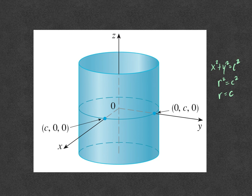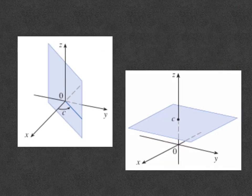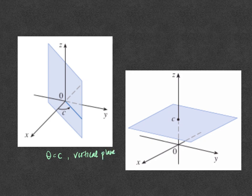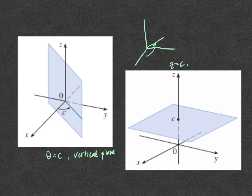This is the reason for the name cylindrical coordinates. There are a couple of other interesting surfaces. The graph of θ equals c is a vertical plane — think of a sheet of paper running through that line out from the origin. And if z equals c, we have a horizontal plane, because z is equal to some constant.